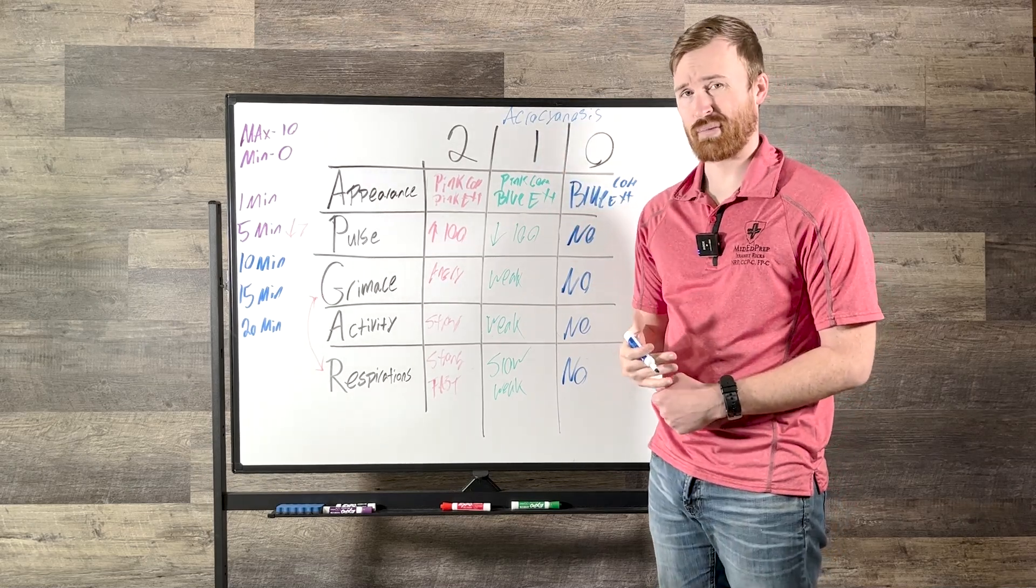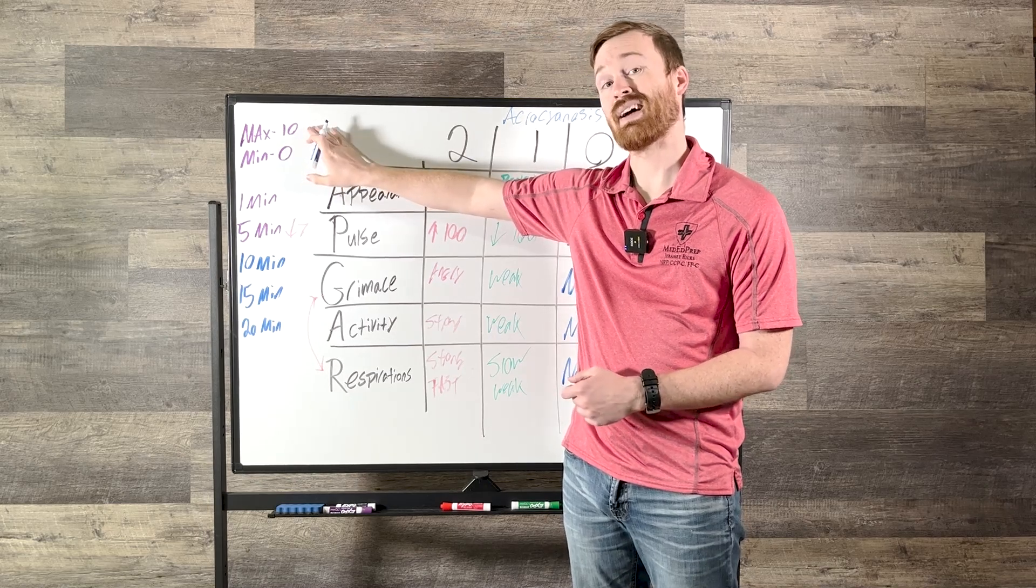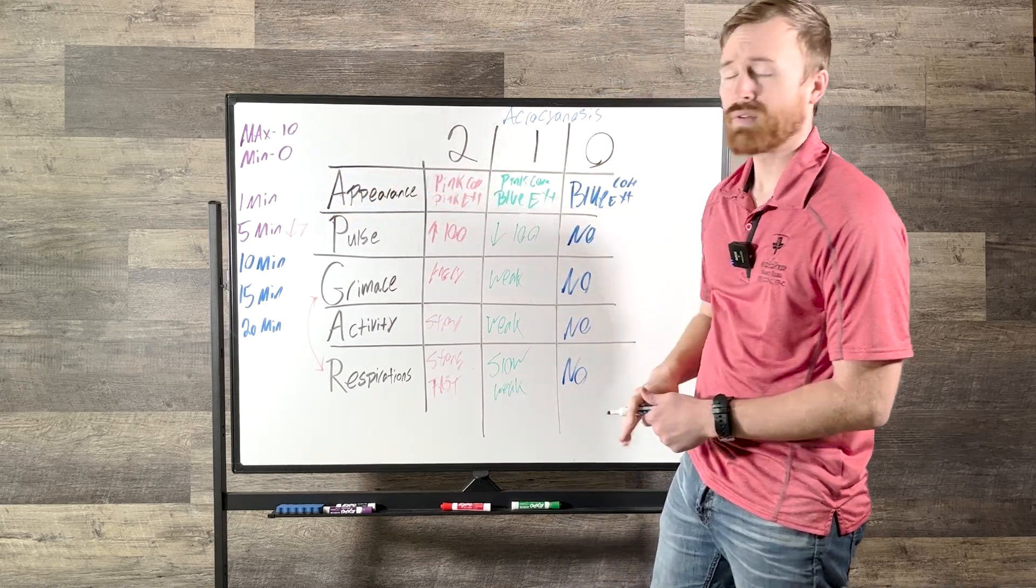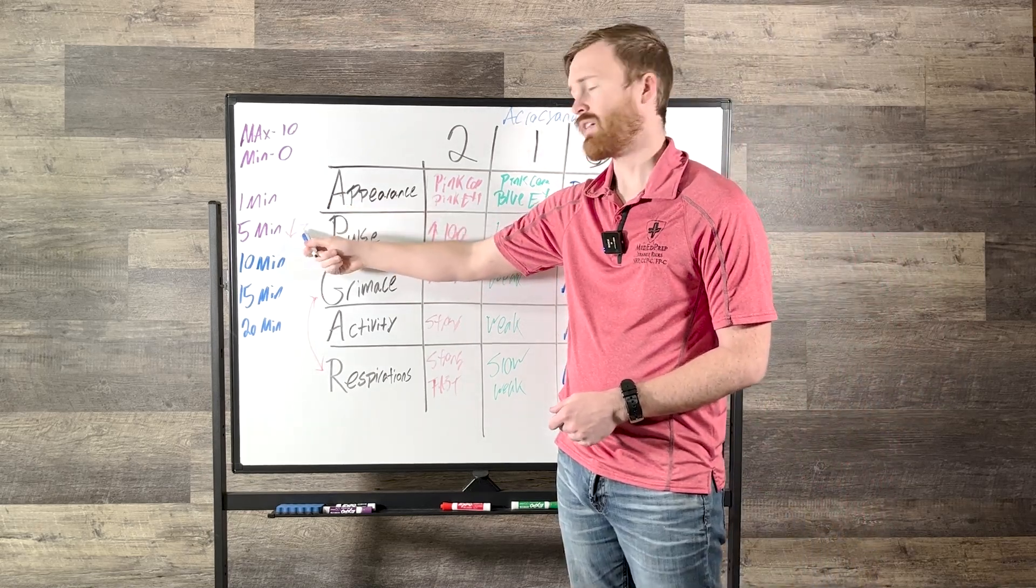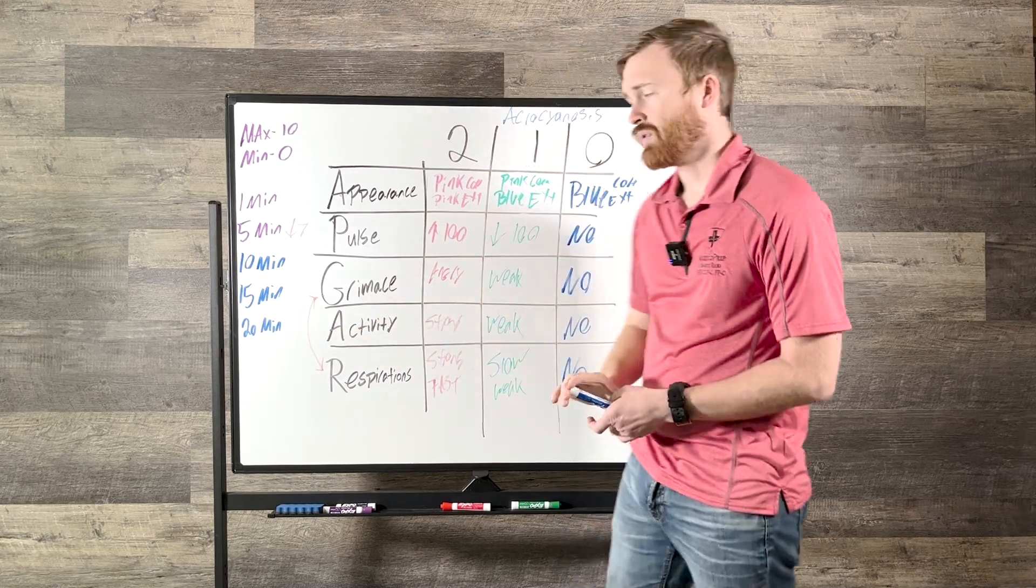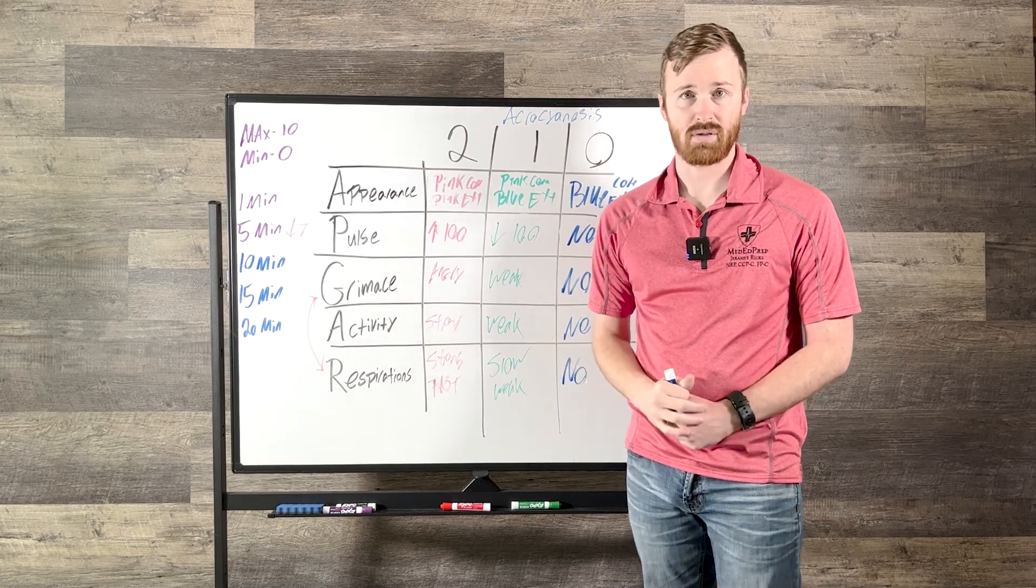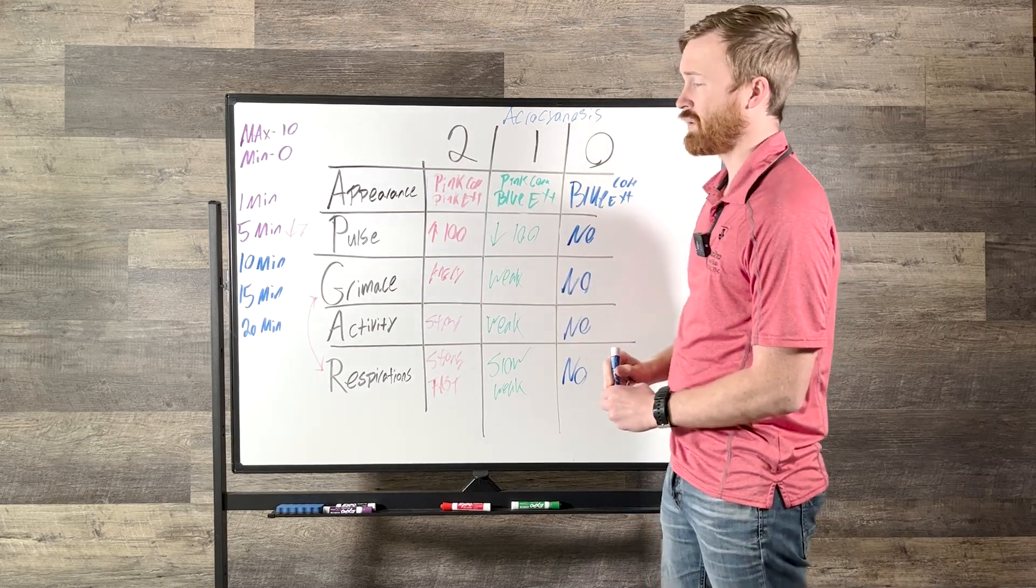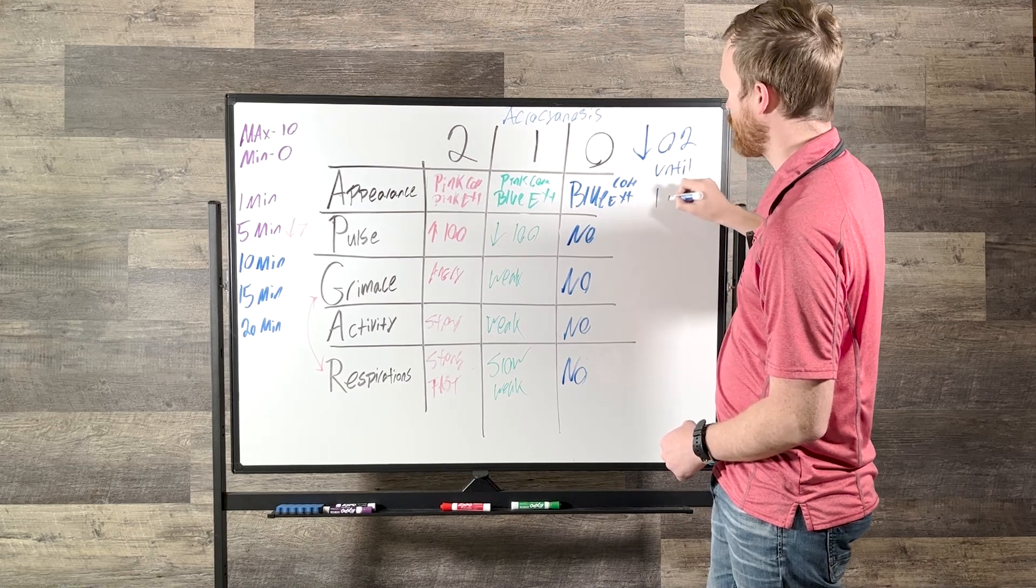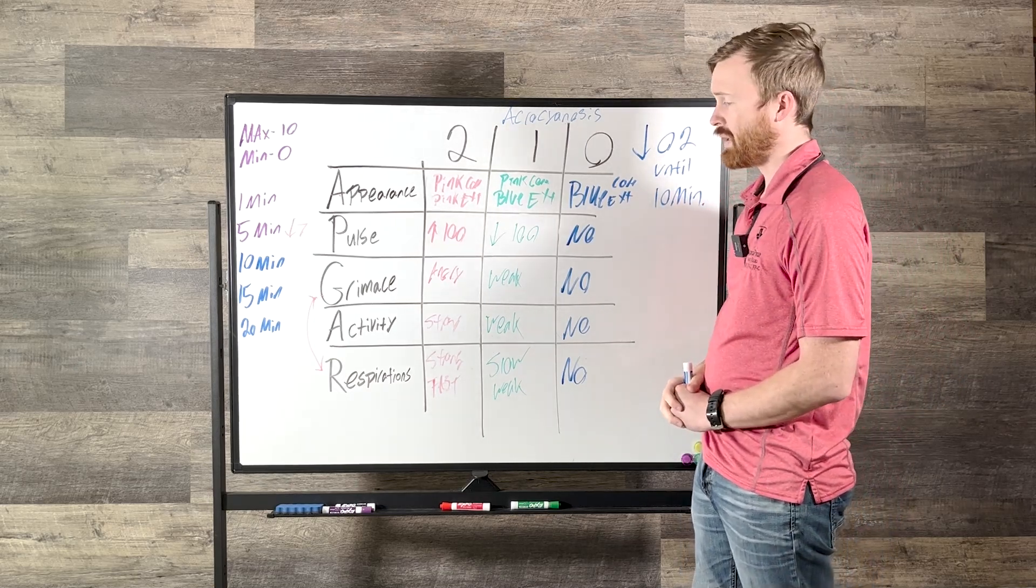So to refresh, the big things you need to know: acrocyanosis, one point, pink core, blue extremities. Your maximum score that you're going to get is going to be 10 for an APGAR, zero for your minimum. And that's going to be because out of those five categories, we've got two, one, and zero. You're going to perform your APGAR at one minute after birth, five minutes after birth. And if your five minute APGAR is less than seven, then you're going to do it every five minutes for 10, 15, and 20. If you're doing an APGAR and somebody has a very low pulse or something like that, and you're trying to get through resuscitation, oxygen is going to be your biggest bet. And it's going to profoundly help them, but don't be afraid because these newborns, they're going to have a low O2 until 10 minutes. And so once they hit 10 minutes after birth, that's about the time that you should start expecting it to be normal again. But this is the APGAR.